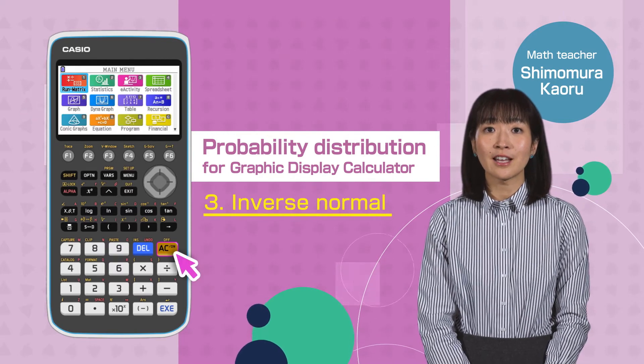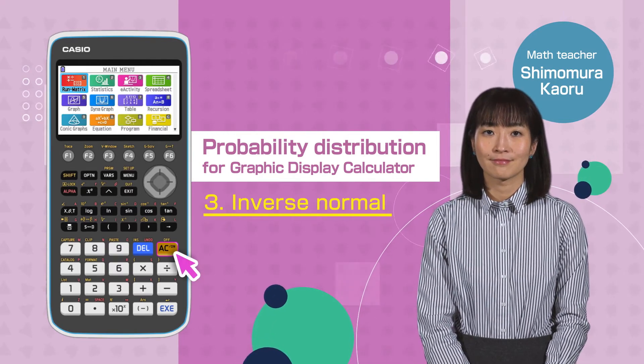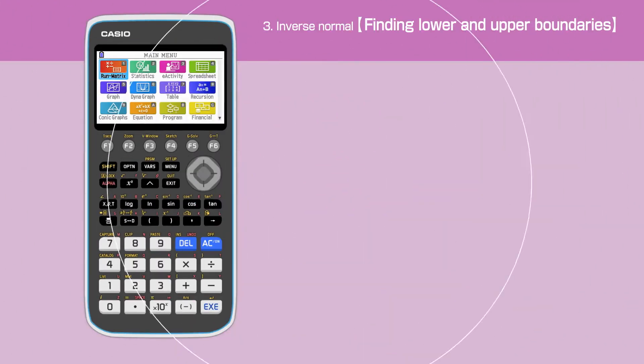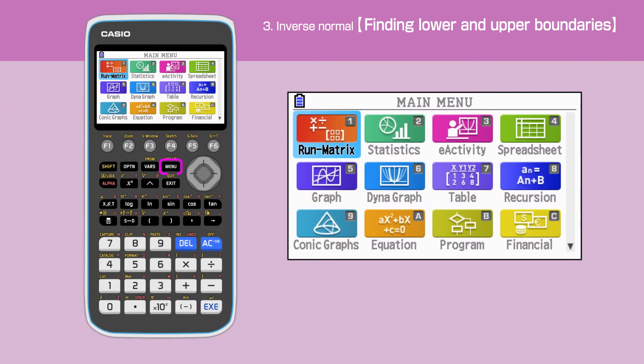Switch on your calculator pressing AC button. Press the menu key to open the main menu, then move the cursor or press 2 to select the statistics function.